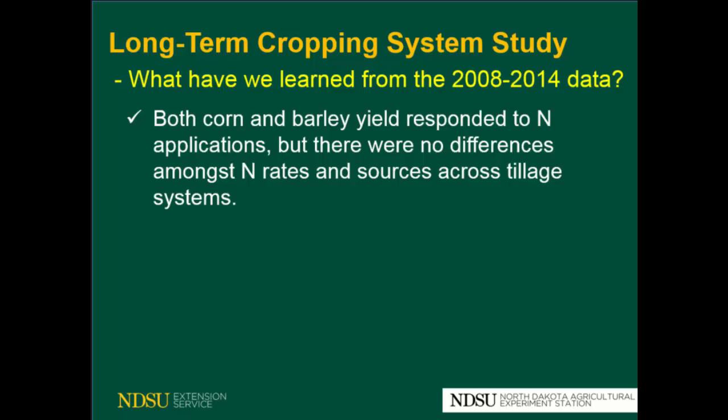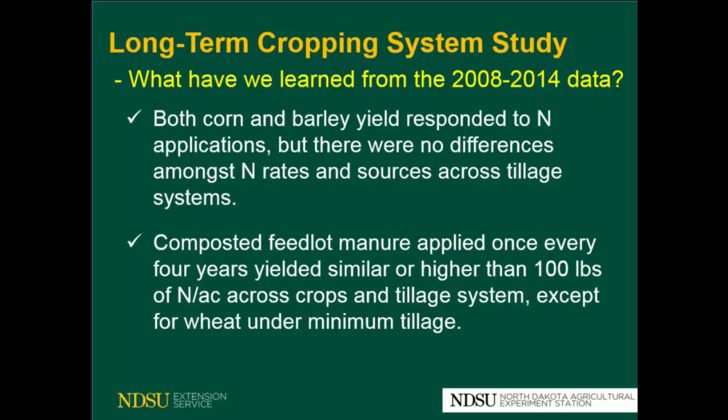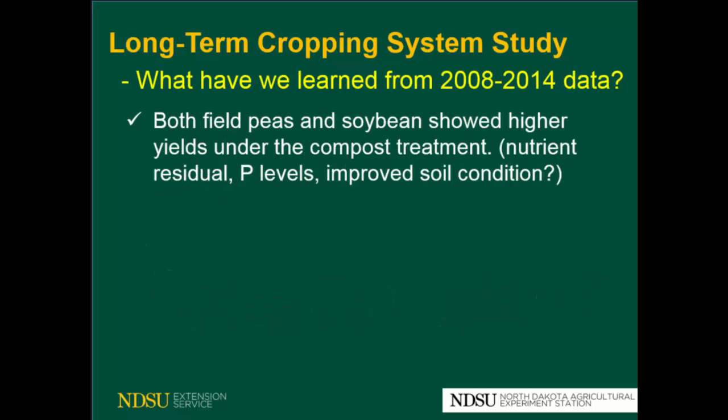What we have learned from this data: corn and barley yield respond to nitrogen application, but there was no difference amongst the nitrogen rate or source across the systems. The compost feedlot manure applied once every four years is similar to or higher than 100 pounds of nitrogen per acre across crops, except for wheat under minimum tillage. Field peas and soybeans show higher yields under the compost treatment, though we don't know why that happened.